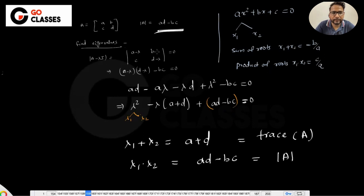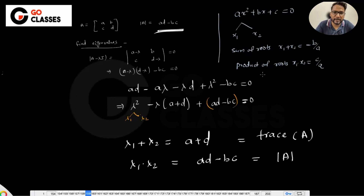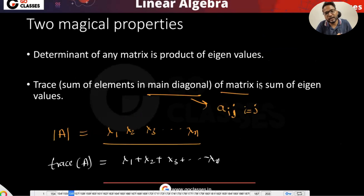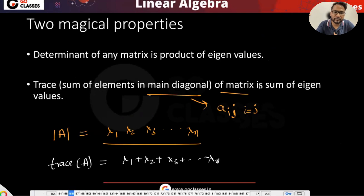So I have proved it for 2 by 2, but in general it is true for any matrix. If you know the eigenvalues of matrix A, then you can find the determinant as their product, and you can also find the trace as their sum.